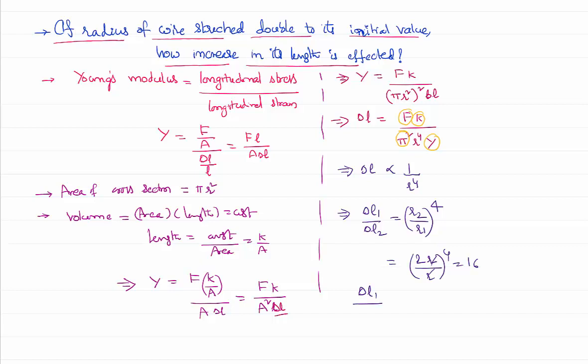So increase in length in the original radius and when the radius is doubled is 16 is to 1. That means delta L2 equals delta L1 by 16. That means the wire is going to expand by only 1 by 16th when compared with the expansion in the first case.